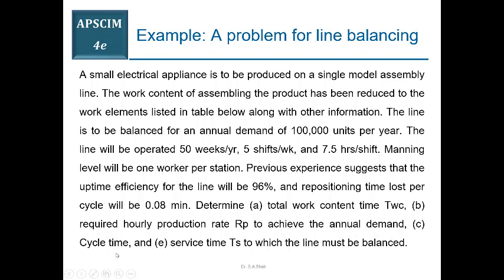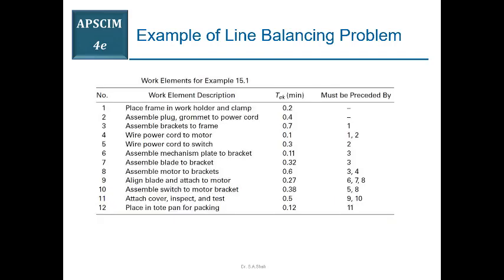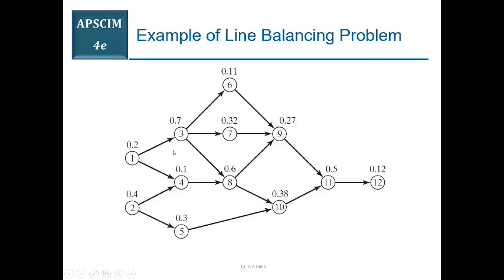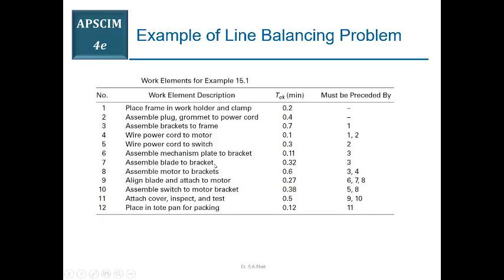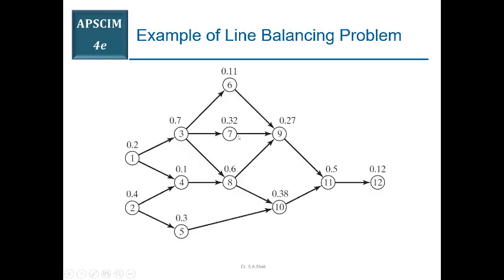You need to find cycle time TC and then service time TS, since TR value is 0.08 minute. First find TC, then subtract TR to get TS. The precedence diagram — either given directly or extracted from the table — gives the graphical representation. You can generate the precedence diagram from the table by identifying independent operations and mapping their dependencies.